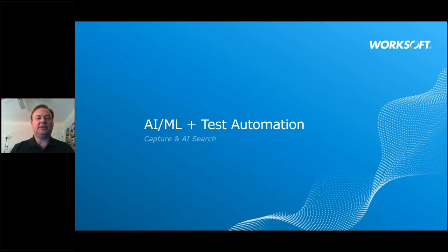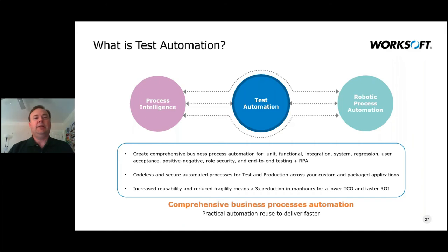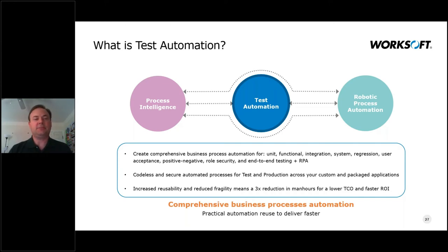Now let's go into where we use artificial intelligence and machine learning in the test automation space. We're able to take all of the automation we've captured and turn it into variability that runs in the test environment. This allows us to carry out all kinds of different tests — from unit to functional, all the way up to integration, system, and regression testing. Even user acceptance, positive, negative, or role-based security testing, and end-to-end testing are all things we're able to do.